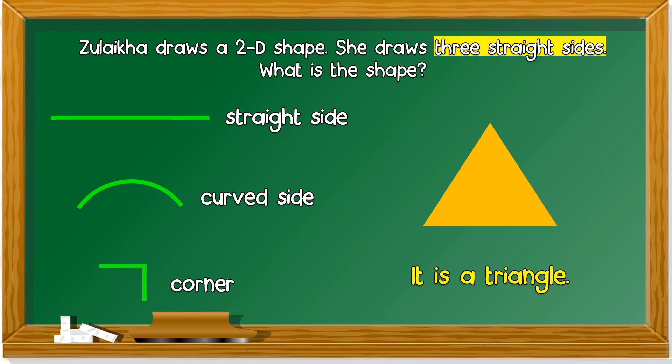Let's see. This is 1 straight side, 2 straight sides, another one - 3. One, two, three. It's a triangle.